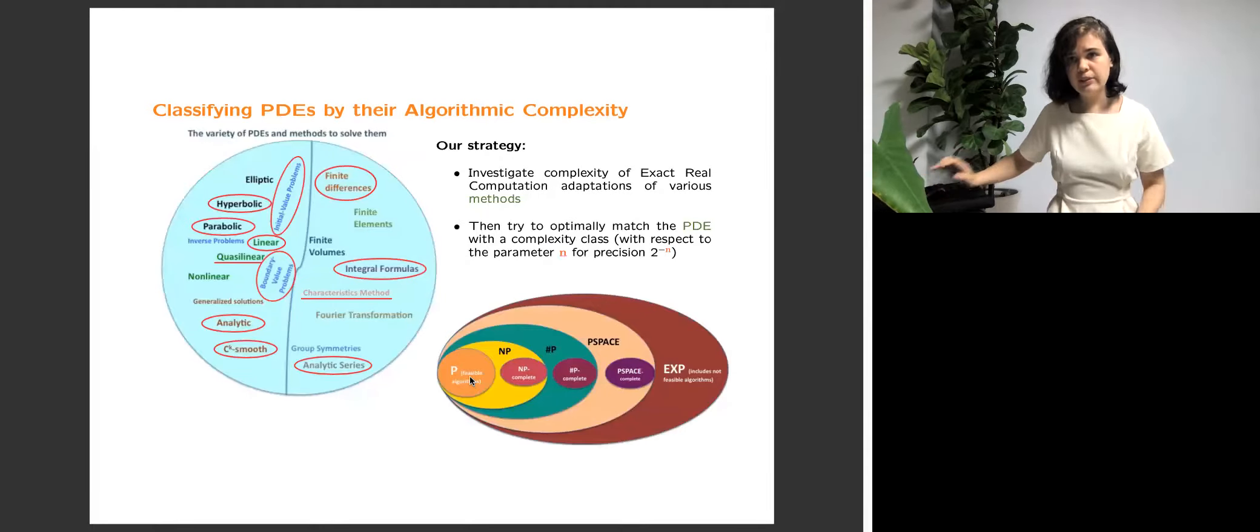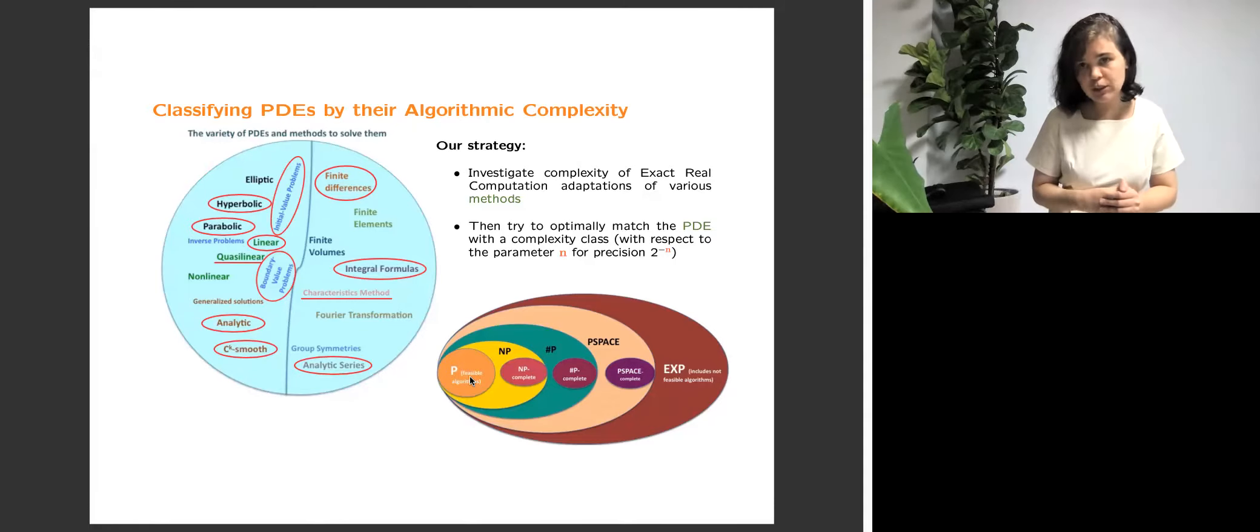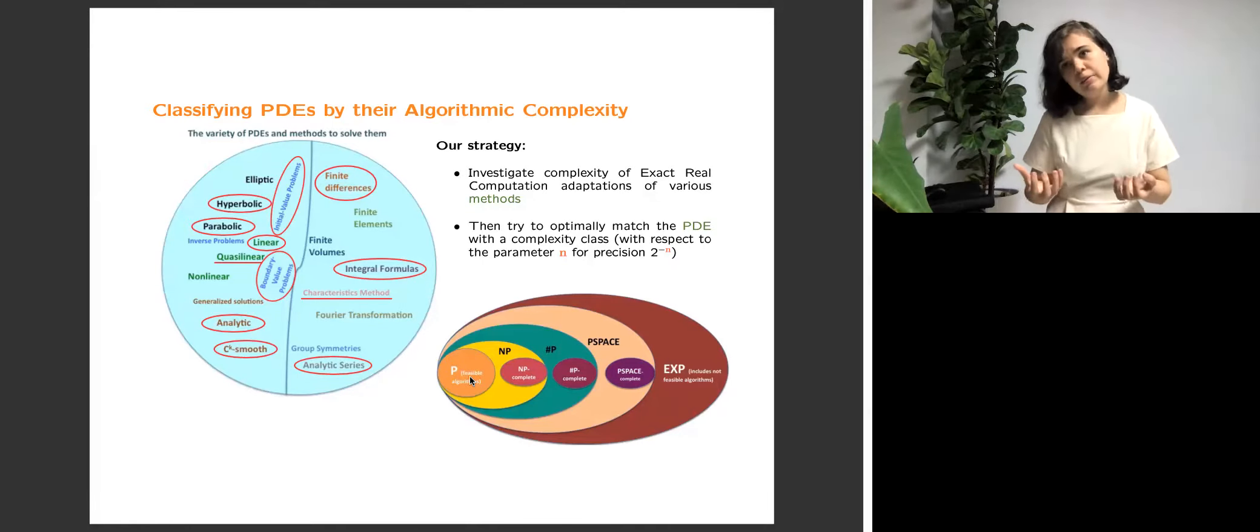We study these questions in detail for PDEs. Our strategy is this: first we take some methods for solving a class of partial differential equations, and we analyze this method in terms of complexity, like running time and memory cells on the parameter n. After having analyzed several different methods adapted to the exact real computation approach, we try to figure out for the initial PDE problem which complexity class is optimal for this problem. It means that no better algorithm can potentially exist. And here on this diagram, which is circled by red, are the classes of equations and methods which we made significant progress in studying these questions, and underlined are our nearest next steps.